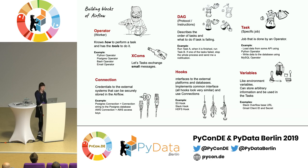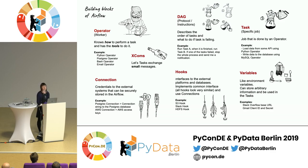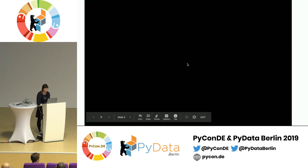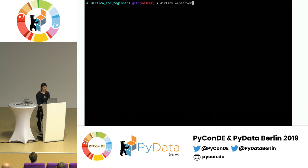Now we have our goal — the pipeline we want to build — and we have the tools that Airflow provides. The first thing you usually need is to install everything and have it deployed somewhere, but that is out of scope for this presentation. In the Git repository I provided at the beginning, you can find some links to help you get started. But let's assume we have everything installed. The first thing I do before building a pipeline is usually store those connections and variables that I already know in the Airflow UI.